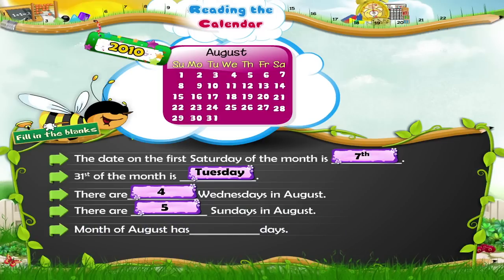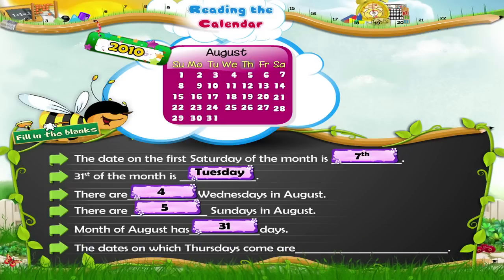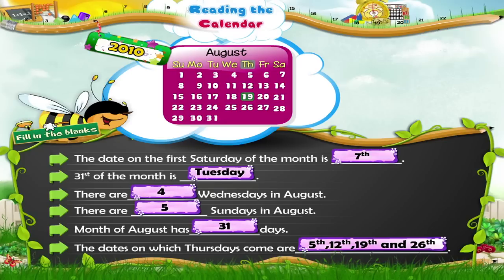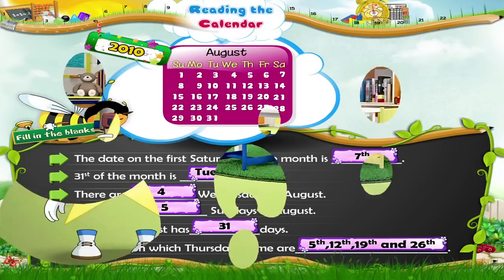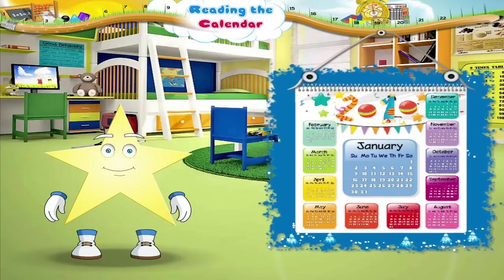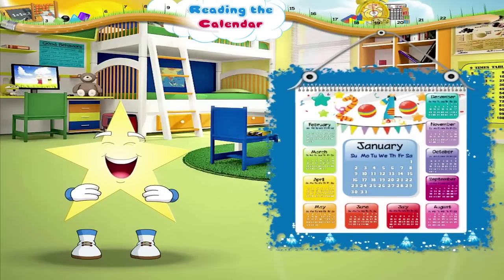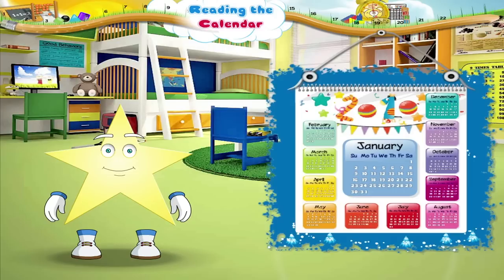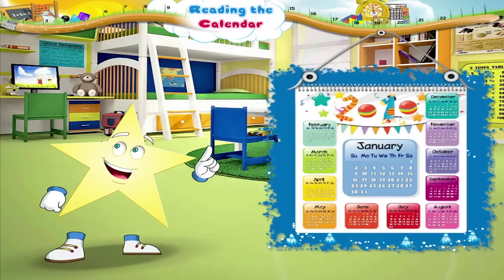The month of August has how many days? The month of August has 31 days. The dates on which Thursdays come are — the dates on which Thursdays come are the 5th, 12th, 19th and 26th. Excellent, Starry! Aren't you happy? Now you can sleep late on a holiday because you have learnt how to read the calendar.